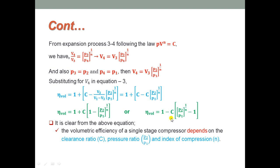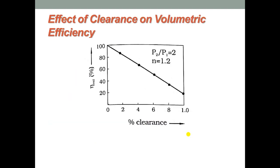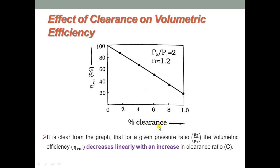It is clear from the above equation that the volumetric efficiency of a single-stage compressor depends on the clearance ratio C, the pressure ratio P2/P1, and the index of compression n. From the graph — where one axis shows percentage of volume and the other shows percentage of clearance — for a given pressure ratio, volumetric efficiency decreases linearly with an increase in clearance ratio.